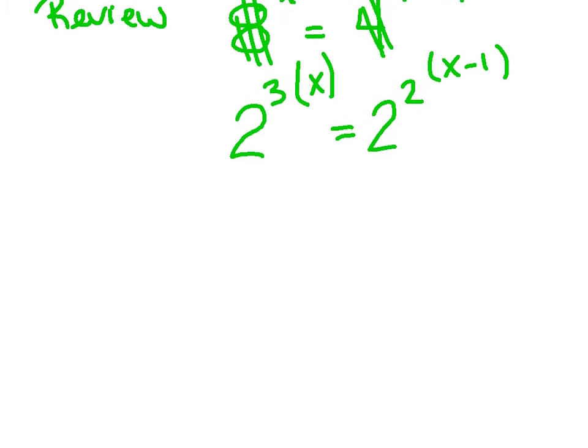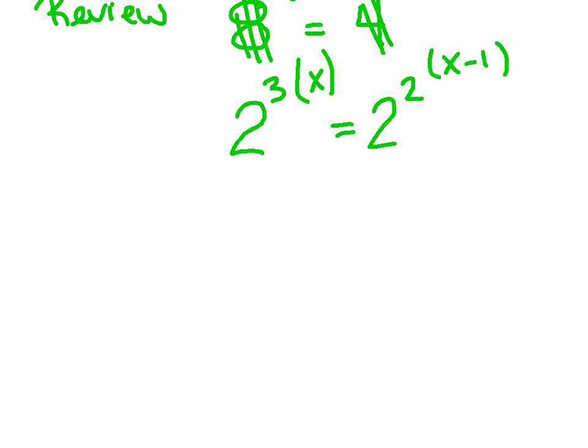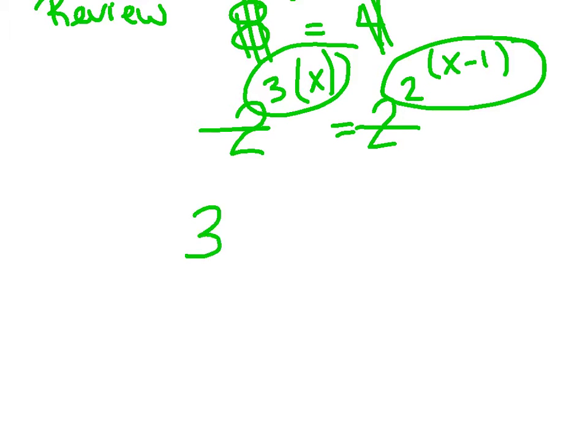Now, once we had common bases, I could really just kill those bases and set my two exponents equal to each other. So I've got 3x equals 2x minus 2. Then, of course, I just want to solve for x, subtract my 2x, and x equals negative 2.